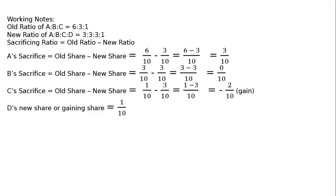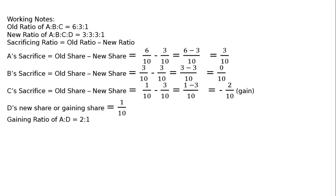D is the new partner coming into the business — D's new share is a gaining share. D had zero share before, now gets 1/10; so 0 minus 1/10 = minus 1/10, meaning D's gaining share is 1/10. Hence gaining ratio of C:D = 2:1, and sacrificing ratio of A:B = 3:0 (only A sacrifices).